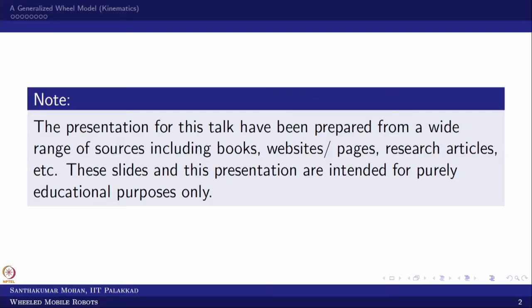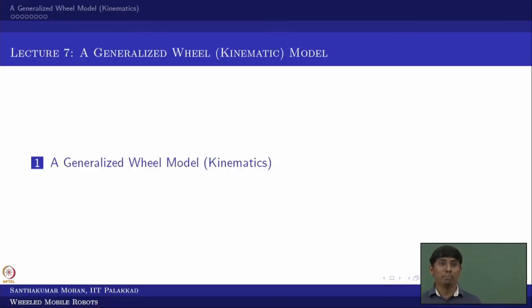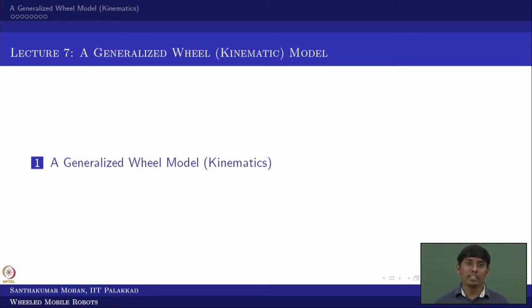Welcome back to the course on wheeled mobile robots. This particular lecture, Lecture 7, is called the generalized wheel kinematic model, which we are going to derive. Last class I gave an introduction, and now we would be talking about the generalized wheel model — what we are covering here is a kinematic model.